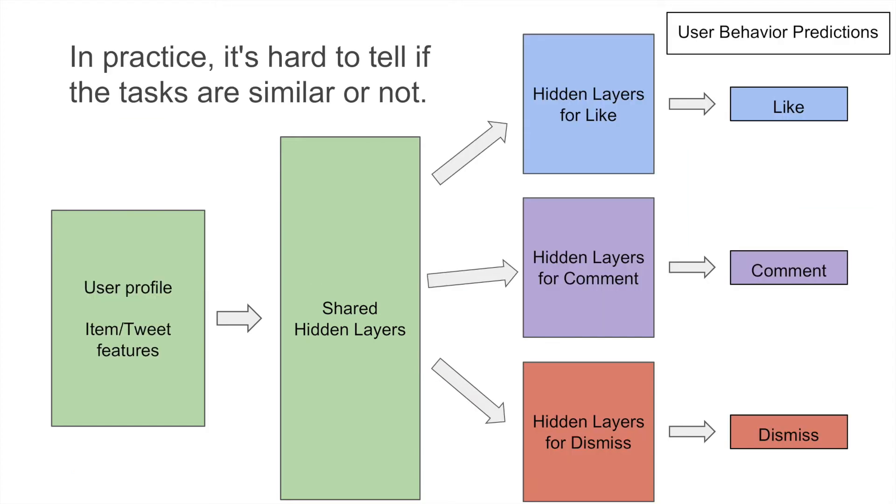As another example, in a complex system such as a recommendation system, we may want to predict multiple user behaviors at the same time. It's very hard to tell if the tasks are similar or not.